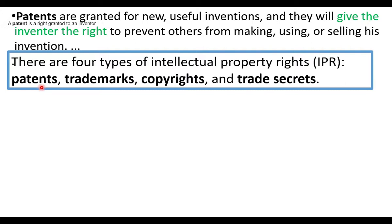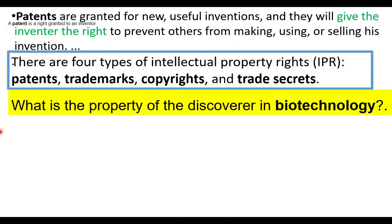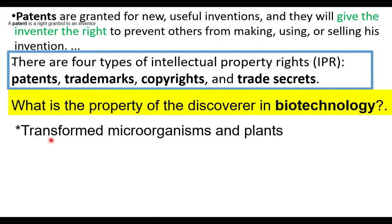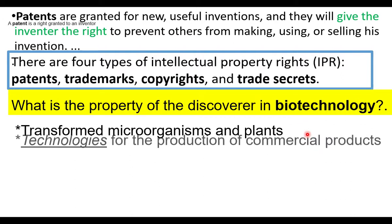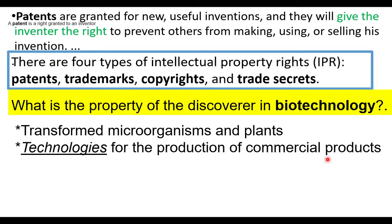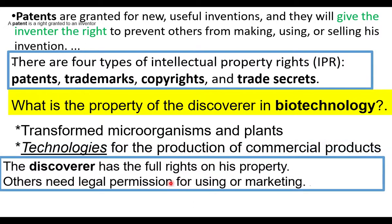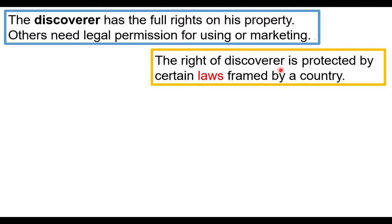The patent certificate itself is an Intellectual Property because a person can sell their patent. What is the property of a discoverer in biotechnology? In the era of biotechnology, recombinant DNA products are important Intellectual Properties. Transformed microorganisms and plants — that is, genetically modified microorganisms and plants — are Intellectual Properties in biotechnology. Technologies developed by biotechnologists for the production of commercial products are also Intellectual Property. The discoverer has full right over their property; others need legal permission to use it.